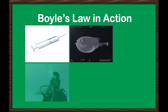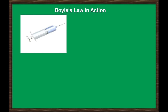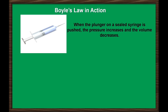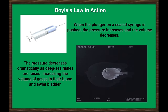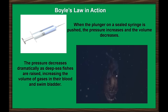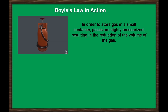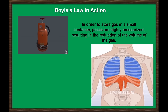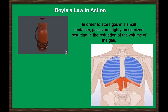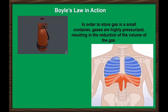Here are some applications of Boyle's Law. A syringe is a medical device normally used to withdraw or inject fluid from a patient's body — when the plunger is pushed, the pressure increases and the volume decreases. Deep-sea fish die when brought from the depths to the surface because the pressure decreases dramatically, increasing the volume of gases in their blood and swim bladder — essentially, the fish pop. In order to store gas in a small container, gases are highly pressurized, resulting in a reduction of volume.